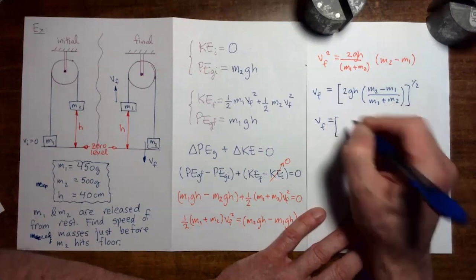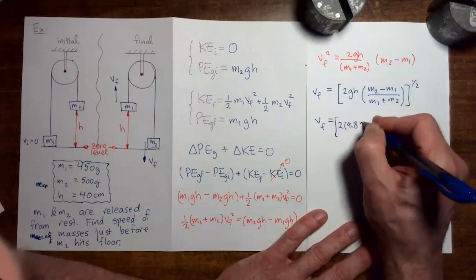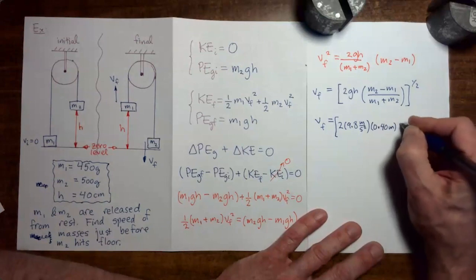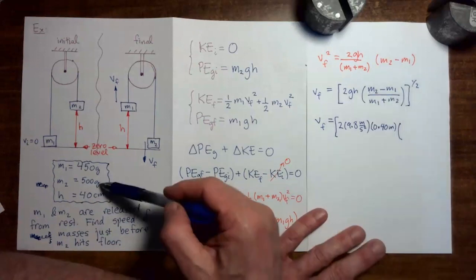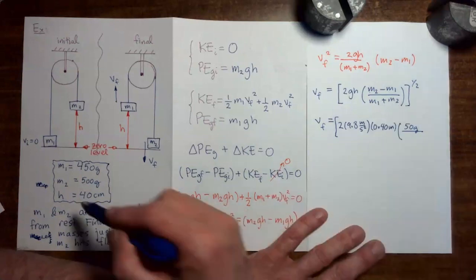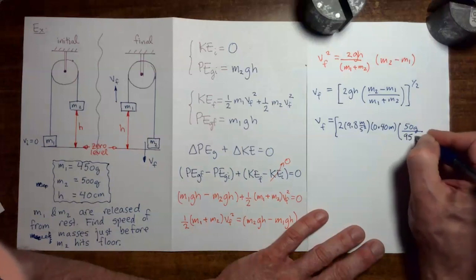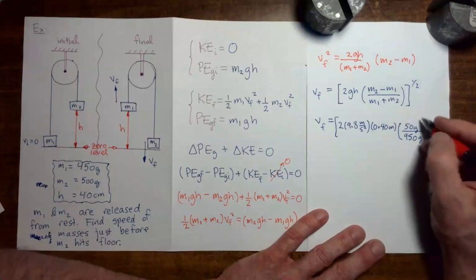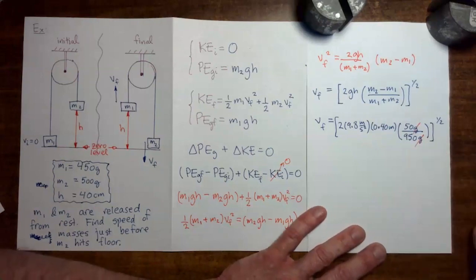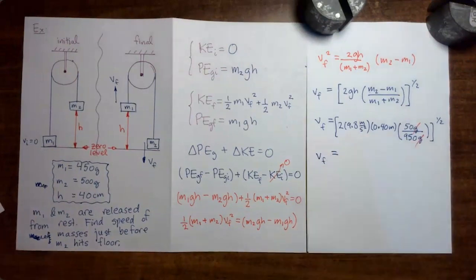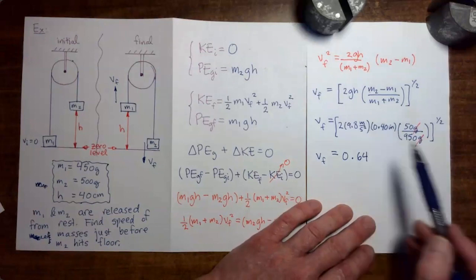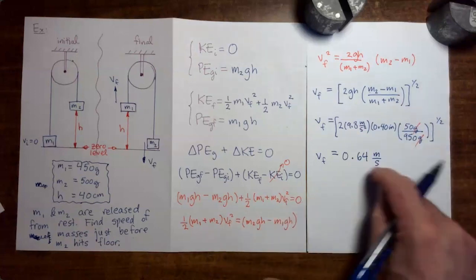Substituting values: g = 9.8 m/s², h = 40 cm = 0.40 m. m2 minus m1 = 500 − 450 = 50 grams, and m1 + m2 = 950 grams. The grams cancel, so we don't need to convert to kilograms. Evaluating the expression gives v_final = 0.64 meters per second. The units work out as meters per second, which is the appropriate unit for speed. We have now completed our second example problem using conservation of mechanical energy.